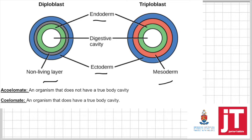Don't forget to always draw the digestive cavity. Triploblastic — there will be an ectoderm on the outside, a mesoderm in the middle, and then an endoderm, and don't forget the digestive cavity.